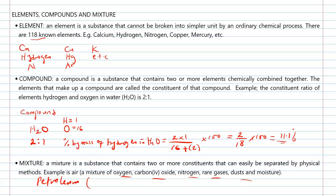Another example of a mixture is petroleum. Petroleum contains petrol, kerosene, petroleum gas, bitumen, etc. This can be separated by a method called fractional distillation.